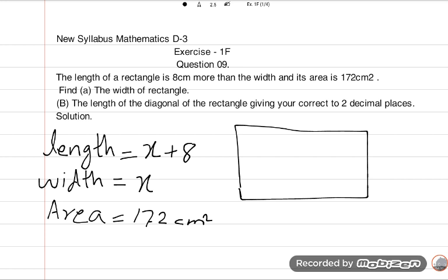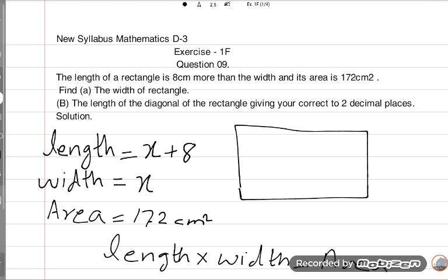Area of the rectangle: area is equal to length multiply by width. So length multiply by width is equal to area of rectangle. So we should put these values in this equation.